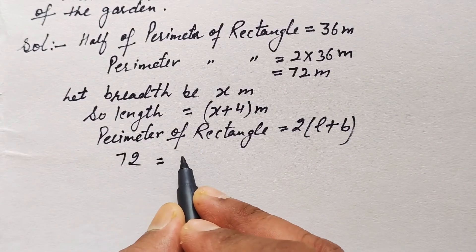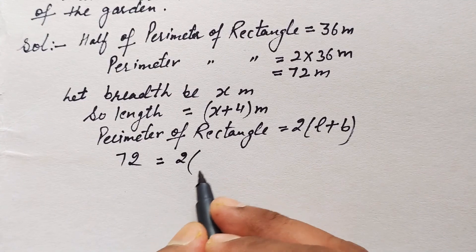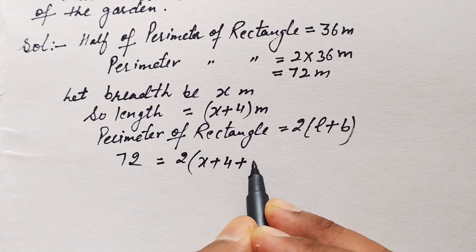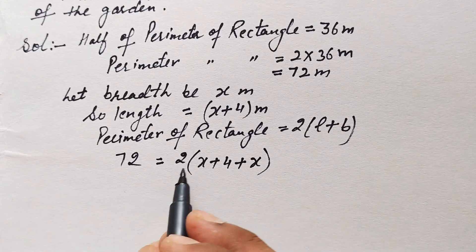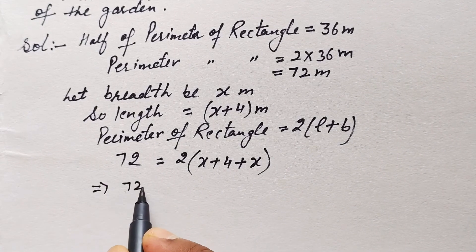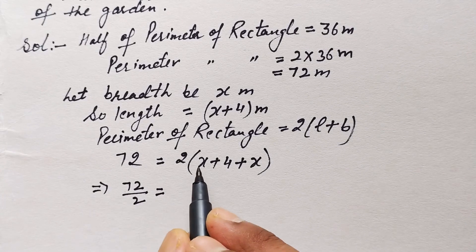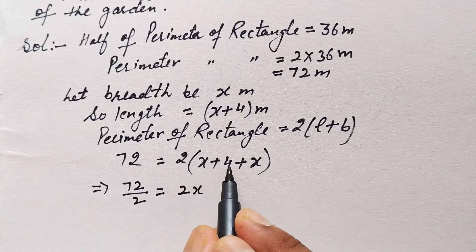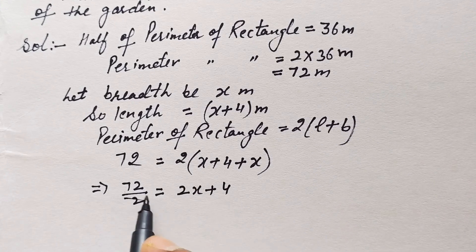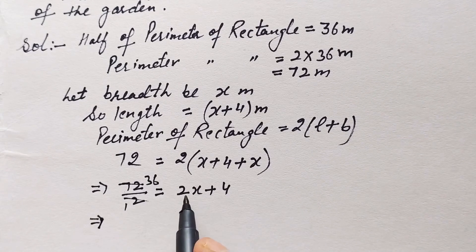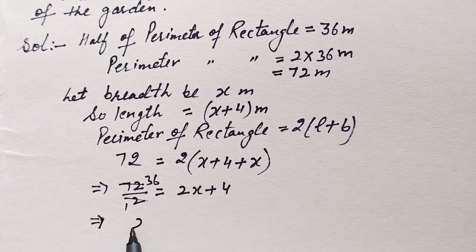So 72 equals 2 into length plus breadth, where length is x plus 4 and breadth is x. Moving the 2 to the other side gives 72 over 2, and combining x plus x gives 2x plus 4, so we get 36 equals 2x plus 4.